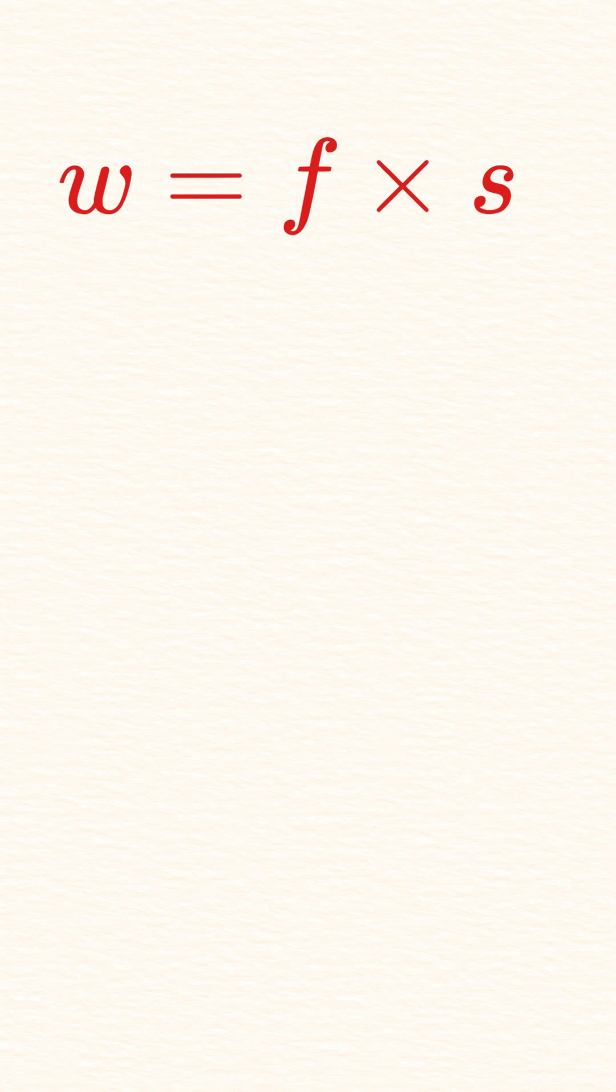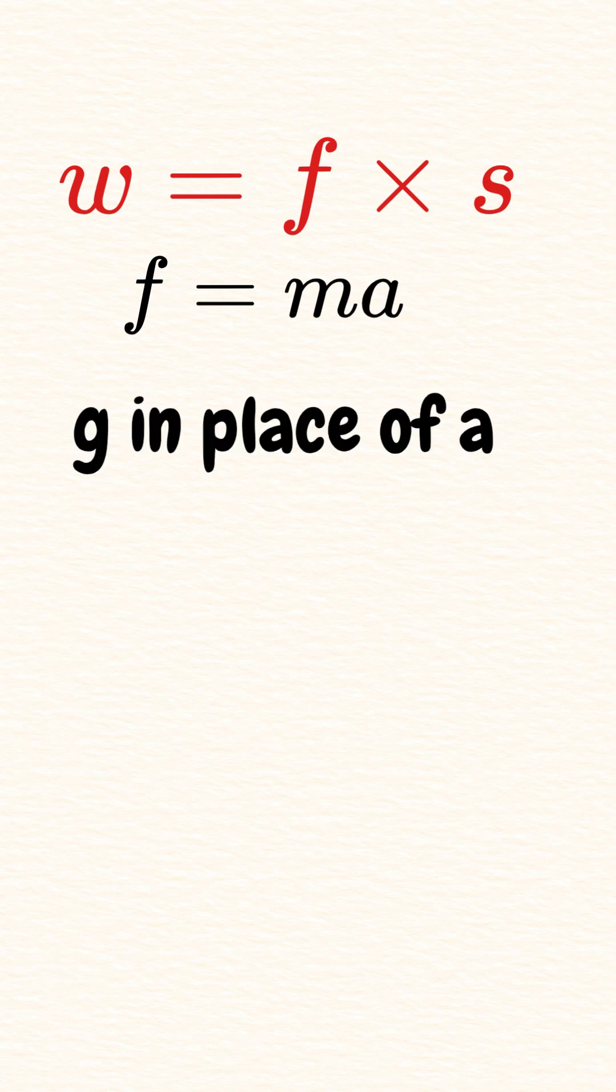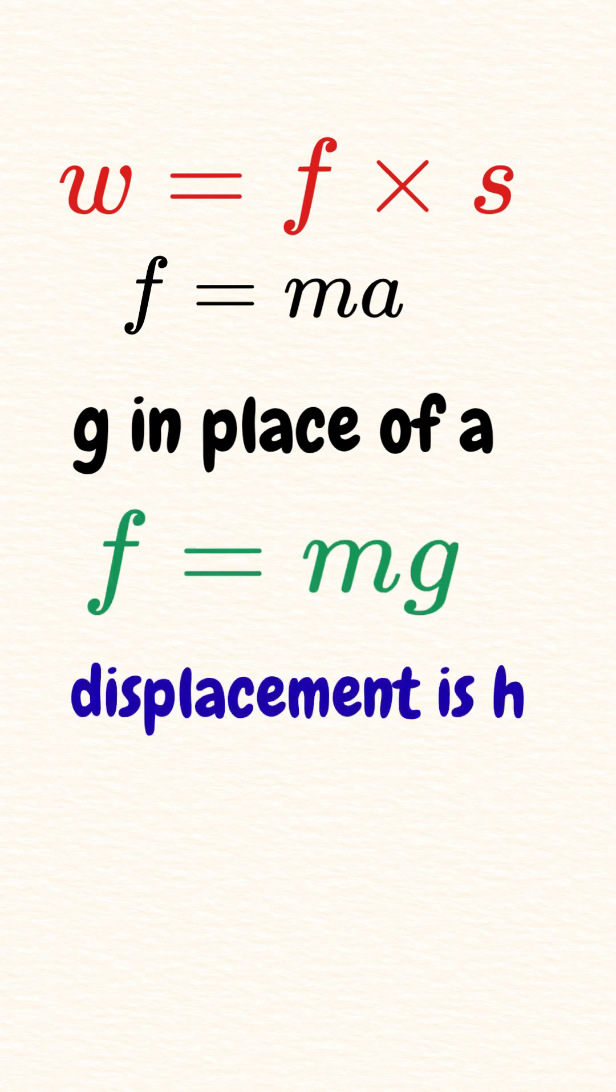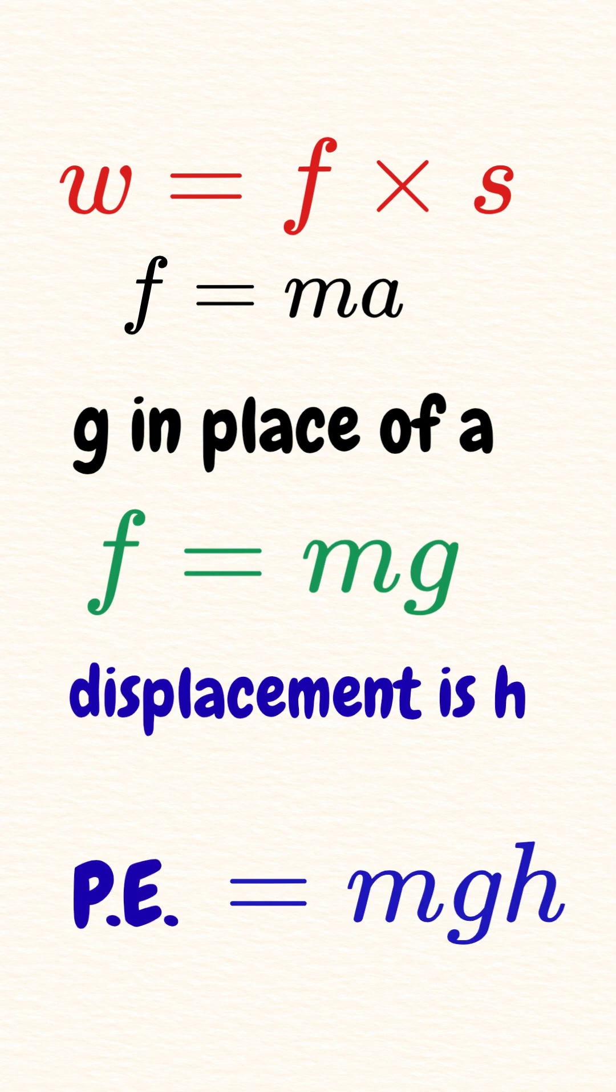According to Newton's second law of motion, F equals ma. But in this case we are working against gravity, so we'll take g, acceleration due to gravity, instead of a. So f equals mg, and displacement is the height h. So this means potential energy equals mgh.